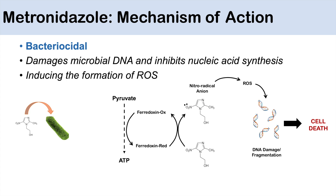So this is essentially a simplified mechanism of action of metronidazole. Through its nitro group acting as an electron sink, it picks up electrons from ferredoxin, becoming an anion, leading to reactive oxygen species production and DNA damage and eventual cell death.